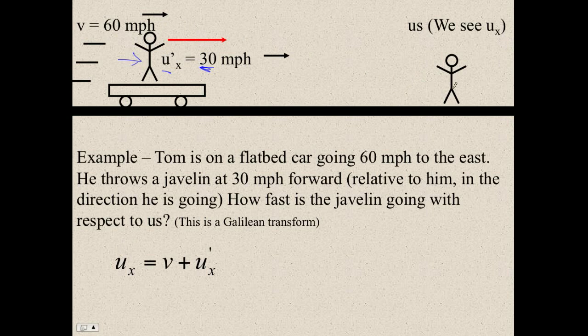Well, in this case, the speed that we see is going to be the 60 that they're already going. If they didn't throw the ball, it would be going that fast. Plus the 30. So the speed we see is 60 plus 30. We're going to see 90 miles per hour.